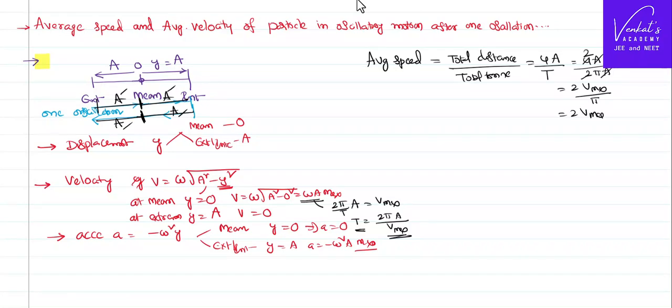So it becomes 2 into V maximum by pi. 2 into V maximum by pi can be written like 22 by 7. 7 comes to the numerator. So this is 2 times 11. So 7 V maximum by 11. These are all just extensions. Anything is possible. You can write in any of these formats. So that is average speed.